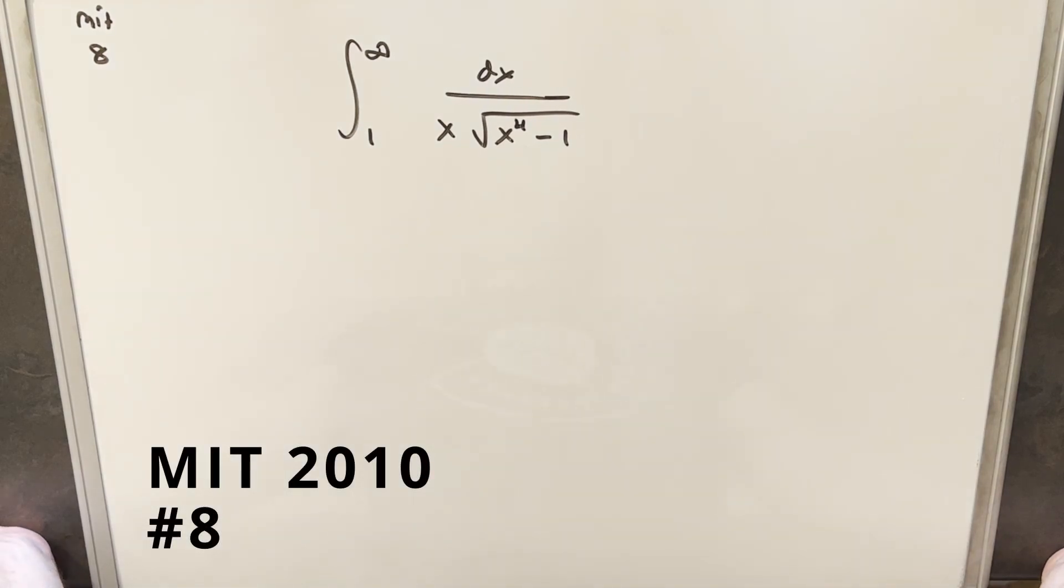Hey, we have here today another integral from MIT integration B 2010. This was problem eight. We have the integral from one to infinity of dx over x times square root of x to the fourth minus one.